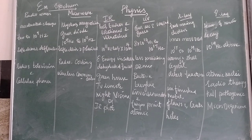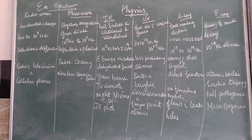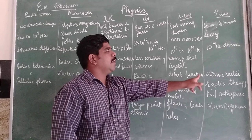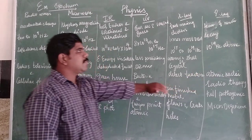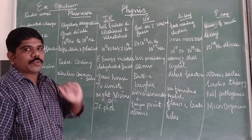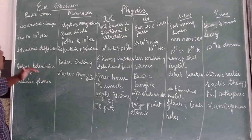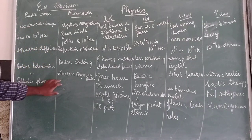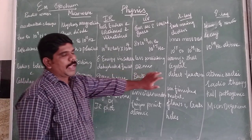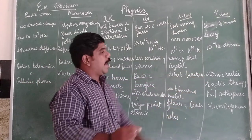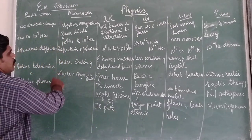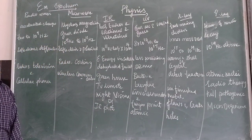So the electromagnetic spectrum is the orderly distribution of electromagnetic waves in terms of frequency, in which we have seen radio waves, microwaves, infrared, ultraviolet, X-rays, and gamma rays. The important parts to remember are the uses of each type and the frequency ranges.